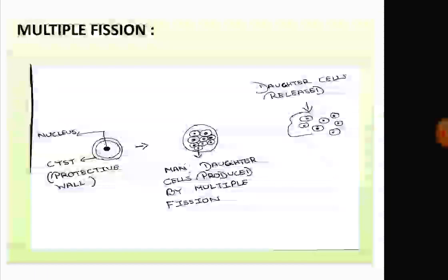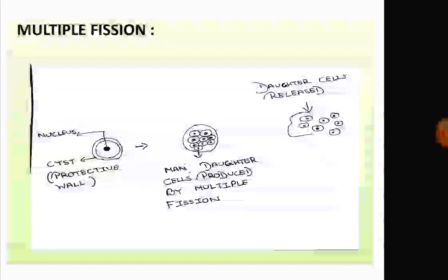In multiple fission, a single Amoeba divides to form many daughter Amoeba cells. Under unfavorable conditions, the Amoeba forms a cyst — a protective wall around itself — and the nucleus undergoes multiple divisions forming many nuclei. Each daughter cell then develops into an Amoeba, and when the cyst bursts, they come out.